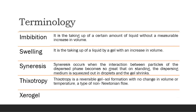Thixotropy is a reversible gel-sol formation with no change in volume or temperature. If we shake a gel preparation or apply force to it, it is converted into a solution or a freely flowing liquid. But if we leave it for some time, it converts back from a solution to a gel — a semi-rigid form. During this process there is no change in volume or temperature, just conversion of a semi-solid preparation into a liquid and back again.